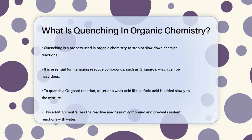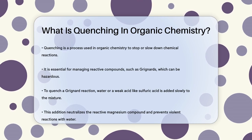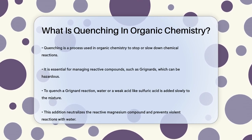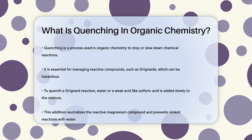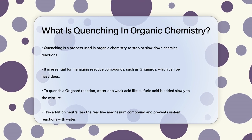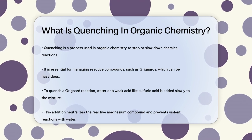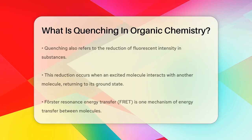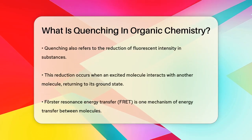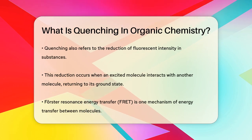When you're dealing with reactive compounds like Grignards, which are highly reactive and can be dangerous if not handled carefully, quenching is essential. For example, to quench a Grignard reaction, you slowly add water or a weak acid, like sulfuric acid, drop by drop to the reaction mixture. This process helps to neutralize the reactive magnesium compound and prevent it from reacting violently with water.